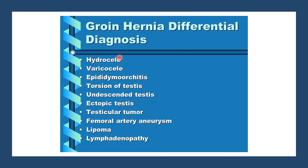The differential diagnoses for patients with groin swellings: the most common is inguinal hernia. Others include varicocele, hydrocele, epididymal cysts, torsion of the testis, undescended testis, ectopic testis, testicular tumour, femoral artery aneurysm, lipoma, and lymphadenopathy.